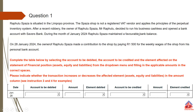Whenever they withdraw money from the bank account, they are withdrawing their own money. On January 2024, the owner of Rapula Spaza made a contribution to the shop by paying $1,500 for the weekly wages of the shop from his personal bank account. Complete the table below by selecting the account to be debited, the account to be credited, and the element affected on the statement of financial position from the drop-down menu. To indicate when an element increases, keep your number positive; to indicate a decrease, use a negative sign.